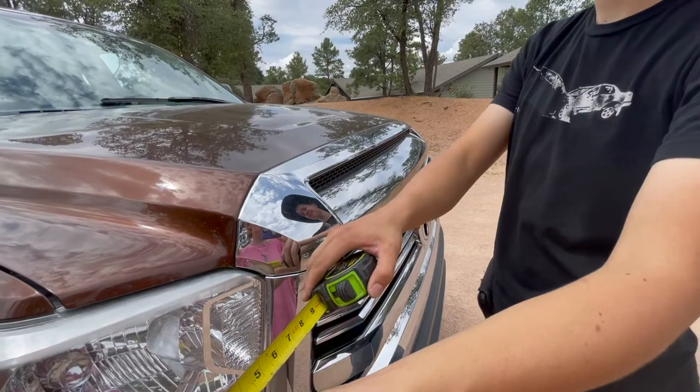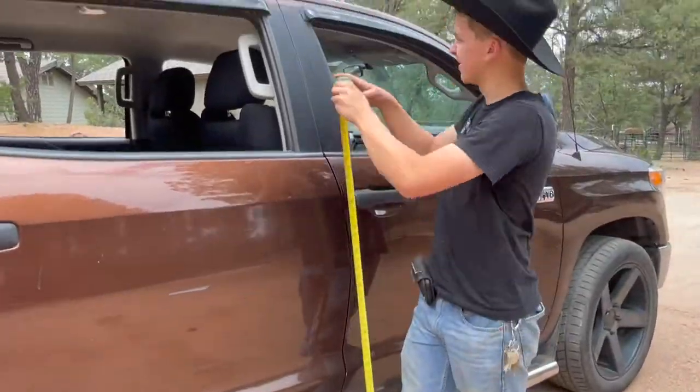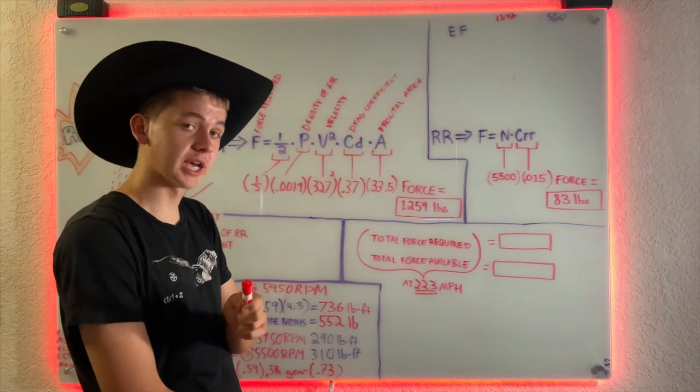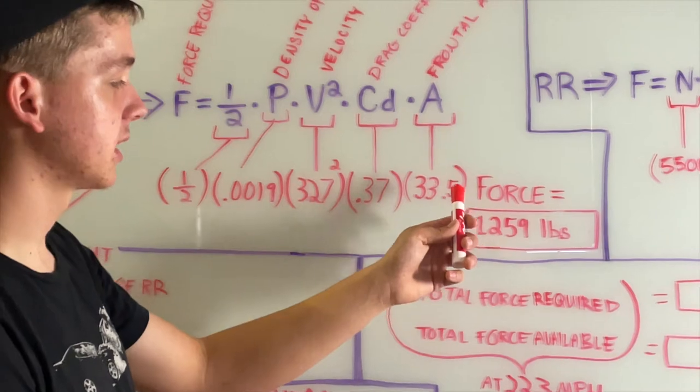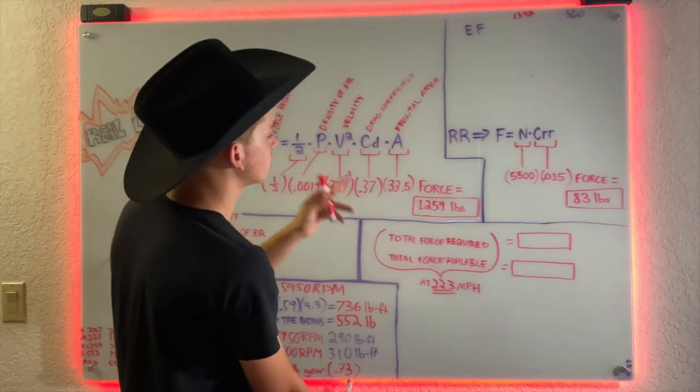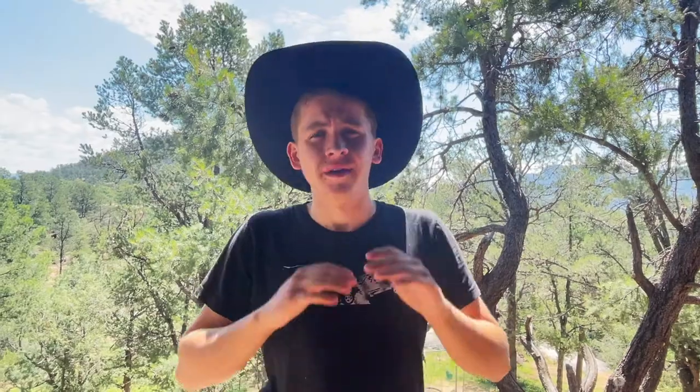Frontal area is easily calculated by measuring the width and height of the vehicle and multiplying by 0.83. The result from multiplying out all these variables is the amount of aerodynamic drag coming against your vehicle - in this case, 1259 pounds. For simplicity's sake, I've decided not to take into account the air lift and downforce possible on various surfaces of the vehicle.